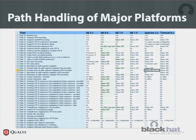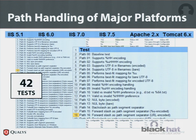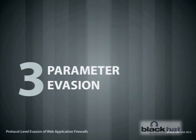I've crafted 42 different tests dealing with path handling — 42 ways web servers are flexible and accept different things, and 42 ways to evade web application firewalls. I've tested several versions of IIS, Apache, and Tomcat. Looking at this table, chances are in your particular environment you will find an evasion technique effective against that web server. The only question is whether the web application firewall is good enough to deal with the evasion.